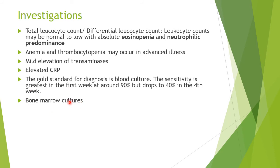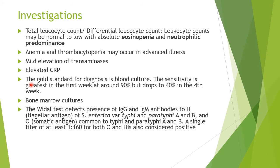Bone marrow cultures are not routinely done for typhoid, but in cases presenting with pyrexia of unknown origin they can be performed and are very sensitive. The Widal test detects the presence of IgG and IgM antibodies to H (the flagella antigen of Salmonella enterica Typhi and Paratyphi A and B) and O (the somatic antigen common to Typhi and Paratyphi A and B). A single titer of at least 1:160 for both O and H is considered positive.